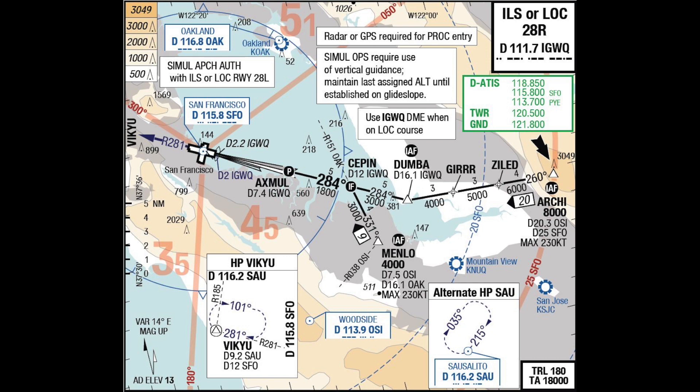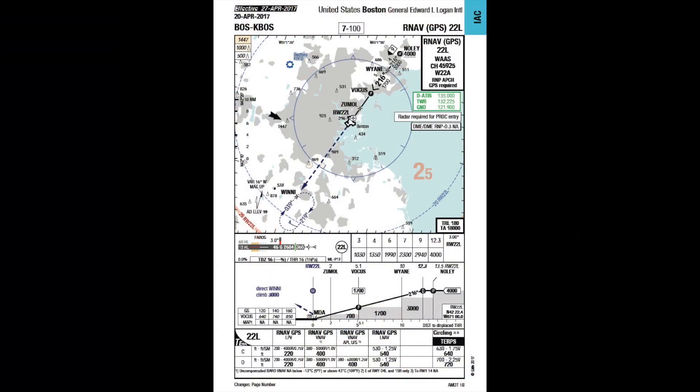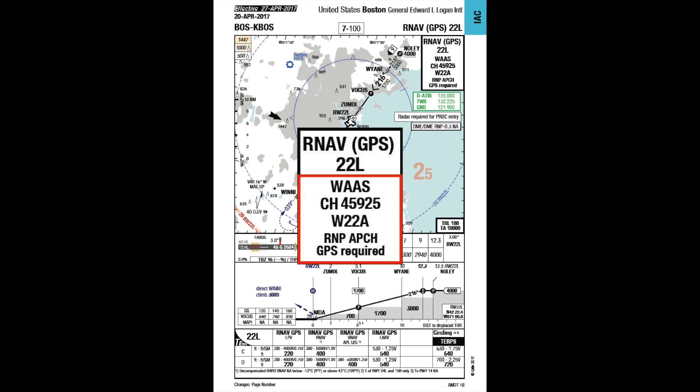The instrument approach chart shows the approach procedure designator within the approach procedure designator box located in the top right corner. This box shows, besides the procedure designator, all procedure relevant components required to fly the lateral part of the final approach, together with their identifier and frequency. For all RNP types, the lower section additionally provides performance-based navigation details with navigation specification, navigation sensor, and functional requirements. For RNP procedure types with localizer performance or localizer performance with vertical guidance, the box also provides the required satellite-based augmentation system information.